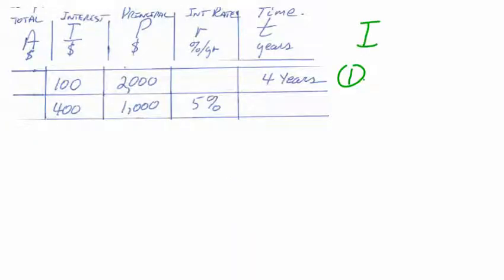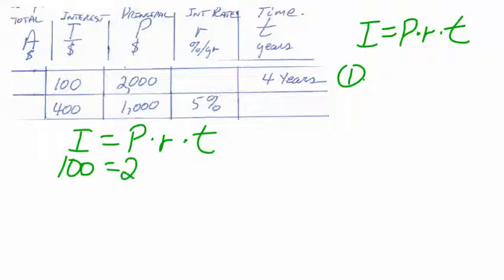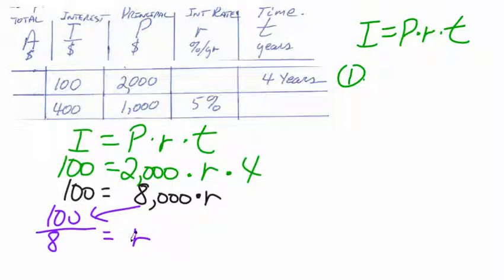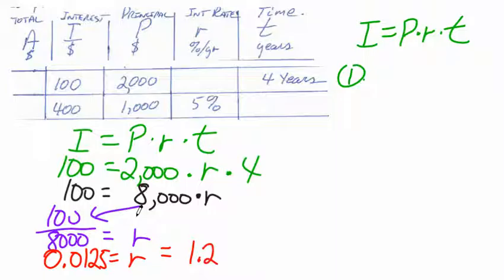Now we have to do a little bit of working backwards. Write down the formula, then plug in the numbers. This time we have numbers on both sides of the equal sign and an unknown amount — the rate R. To find R, you juggle the numbers to the other side to get R by itself. Two thousand times four is eight thousand — pop it under the one hundred, and R is by itself. That gives one over eighty, which is 0.0125, or one point two five percent.